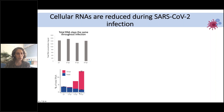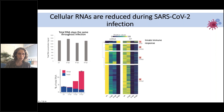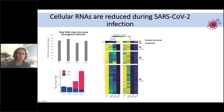Looking at individual genes: 2000 genes showing the most drastic change during SARS-CoV-2 infection — most genes just went down, with footprints correspondingly going down. A small group of genes was actually transcriptionally induced: these are innate immune response genes, specifically interferon-stimulated genes. Overall we see this drastic reduction in cellular gene expression during infection.